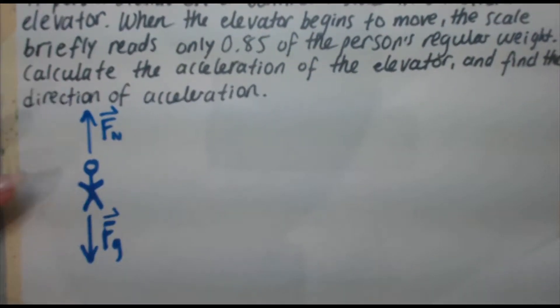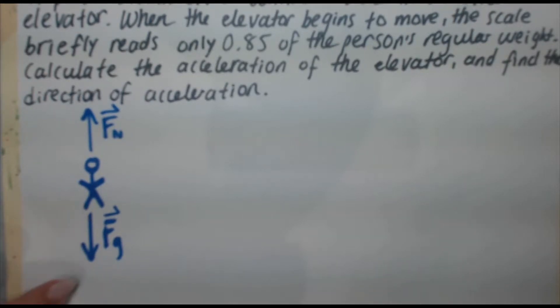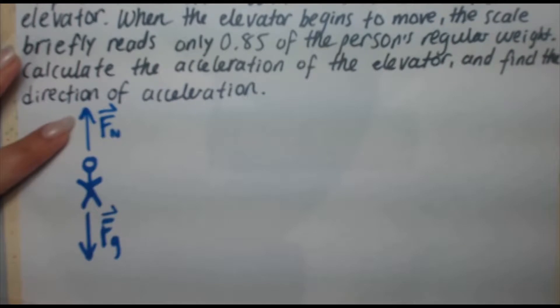You've got a person who has the force of gravity acting on them due to the earth, and there's a normal force. Remember, normal force is due to Newton's third law, action-reaction. The action would be the force of gravity acting down on the scale, so therefore the scale, the surface, pushes back up on the person with an equal magnitude opposite in direction force.